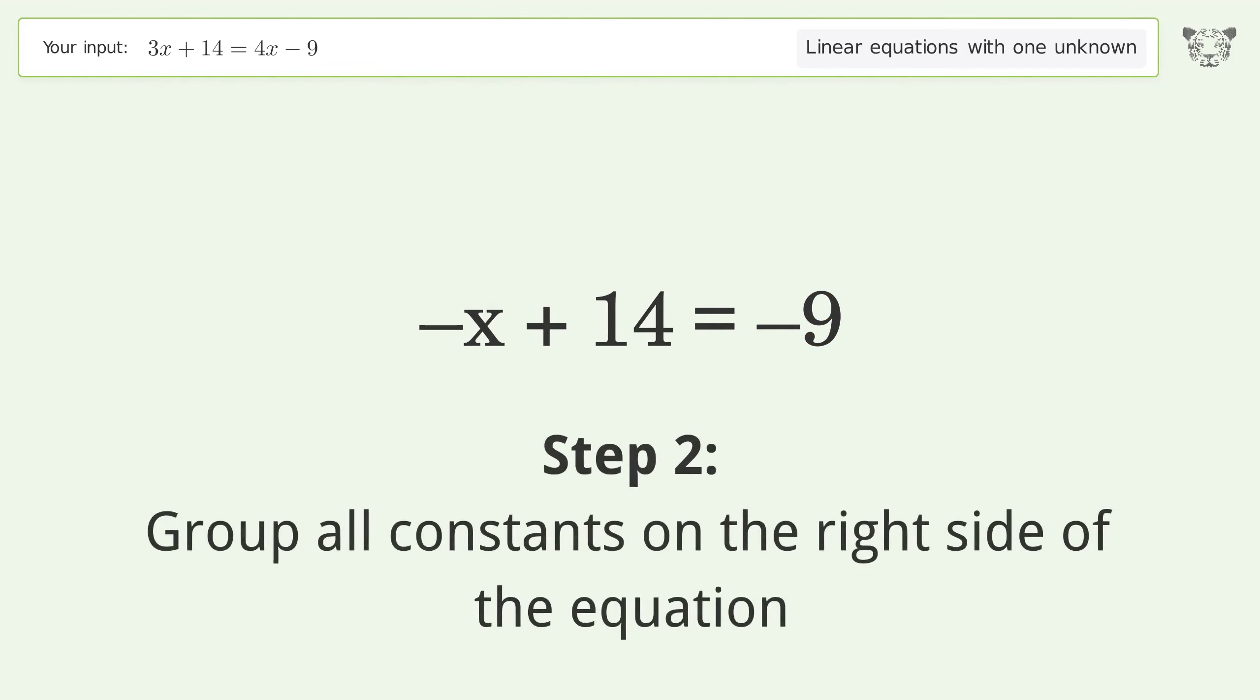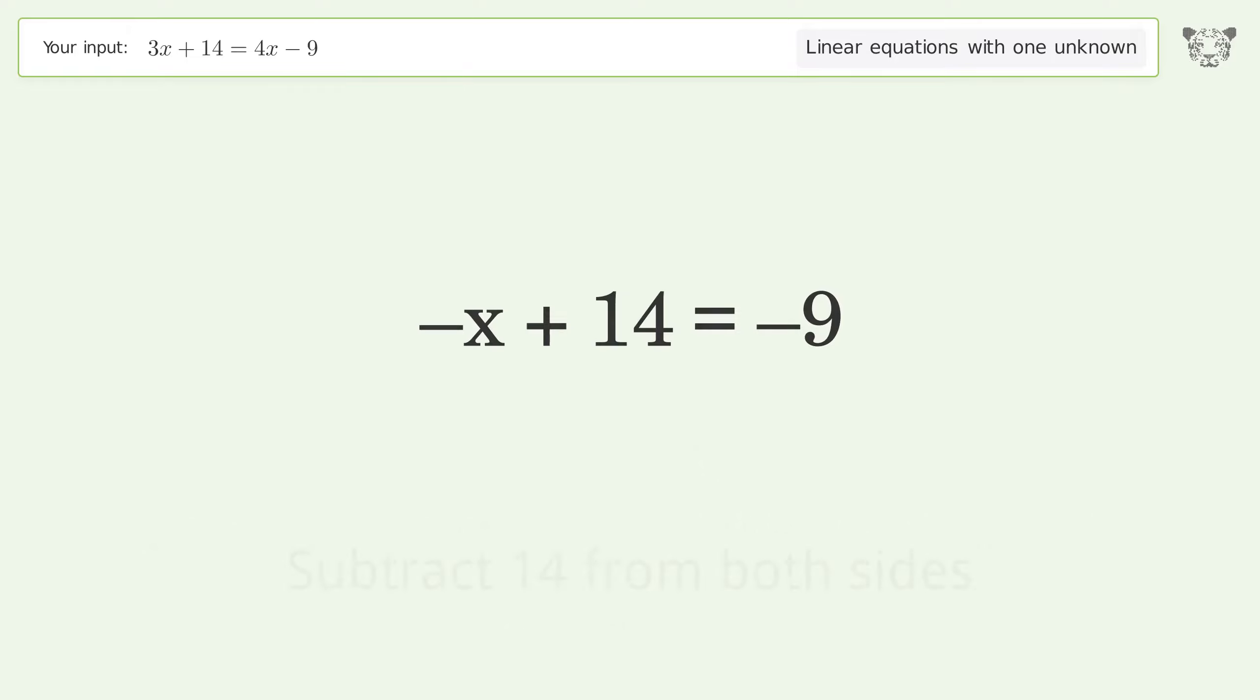Group all constants on the right side of the equation. Subtract 14 from both sides. Simplify the arithmetic.